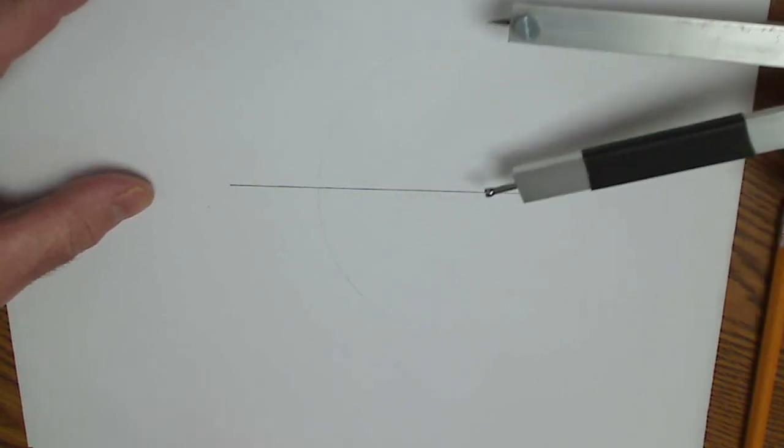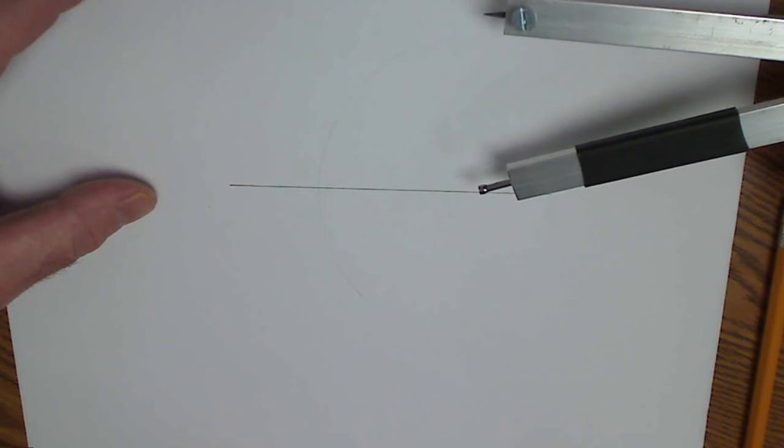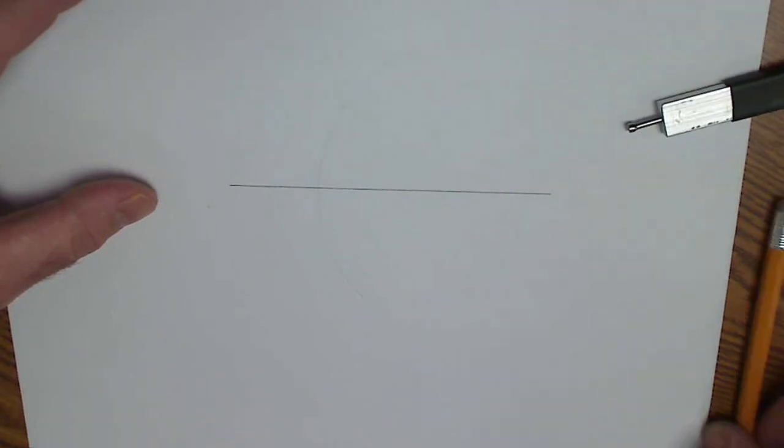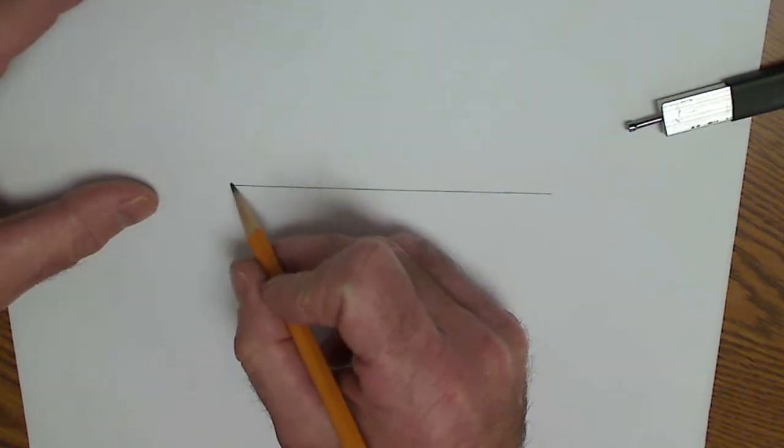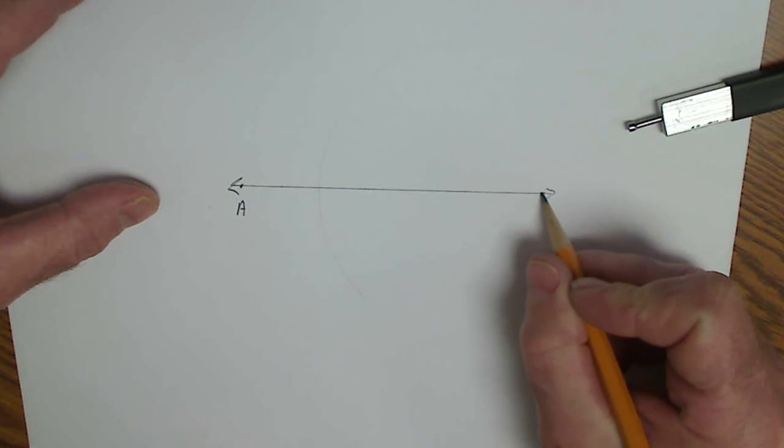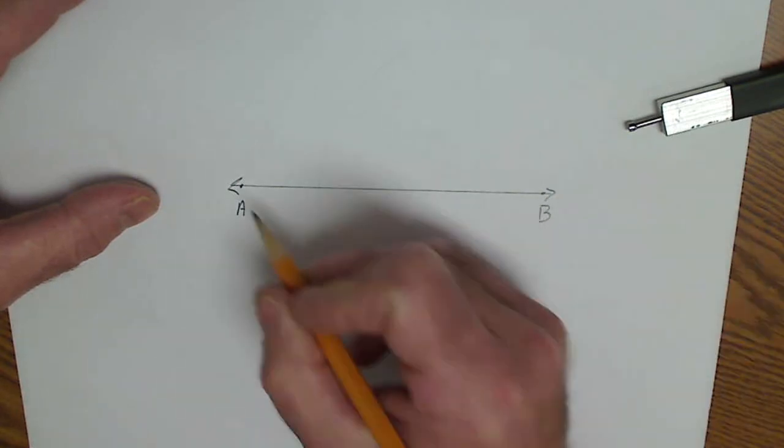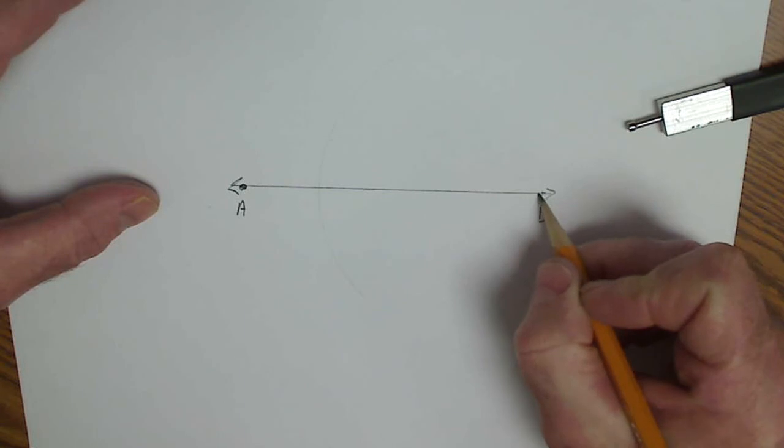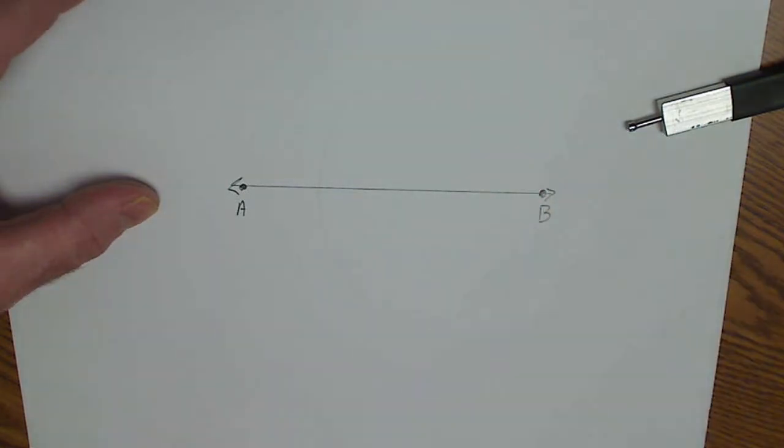Okay, let me go over the branch of geometry called constructions. The first construction we're going to do is a perpendicular bisector. I have line AB, and I want to find the perpendicular bisector between those two points.